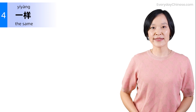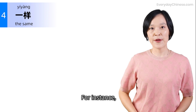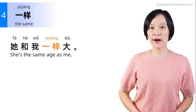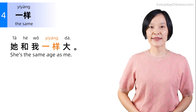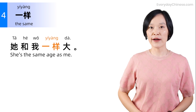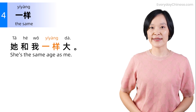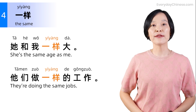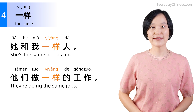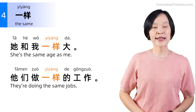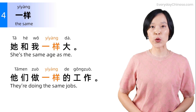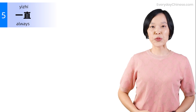The fourth one: 一样, meaning the same. For instance: 他和我一样大 (He is the same age as me). 他们做一样的工作 (They do the same work).